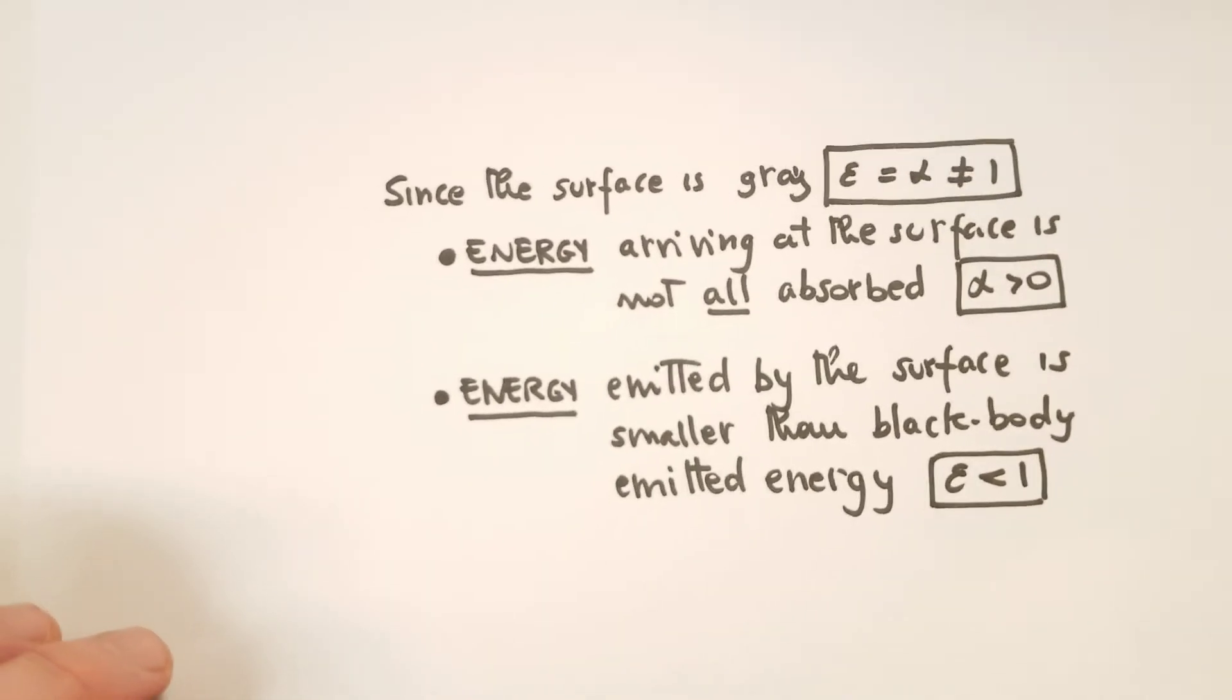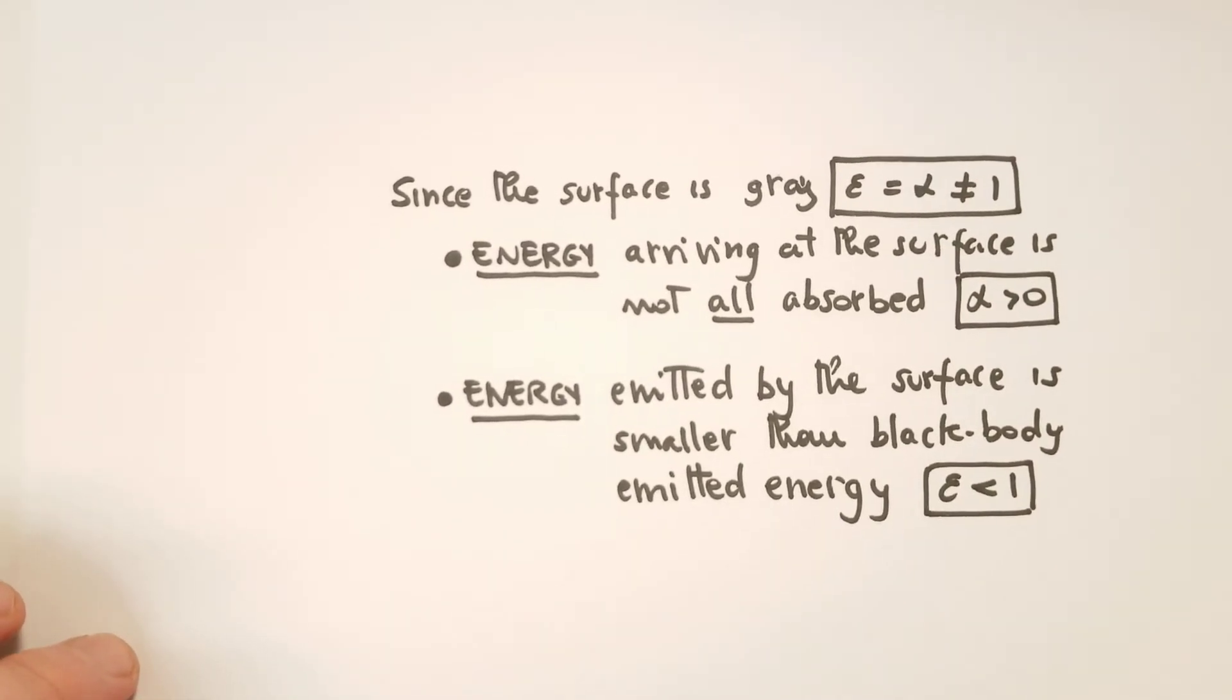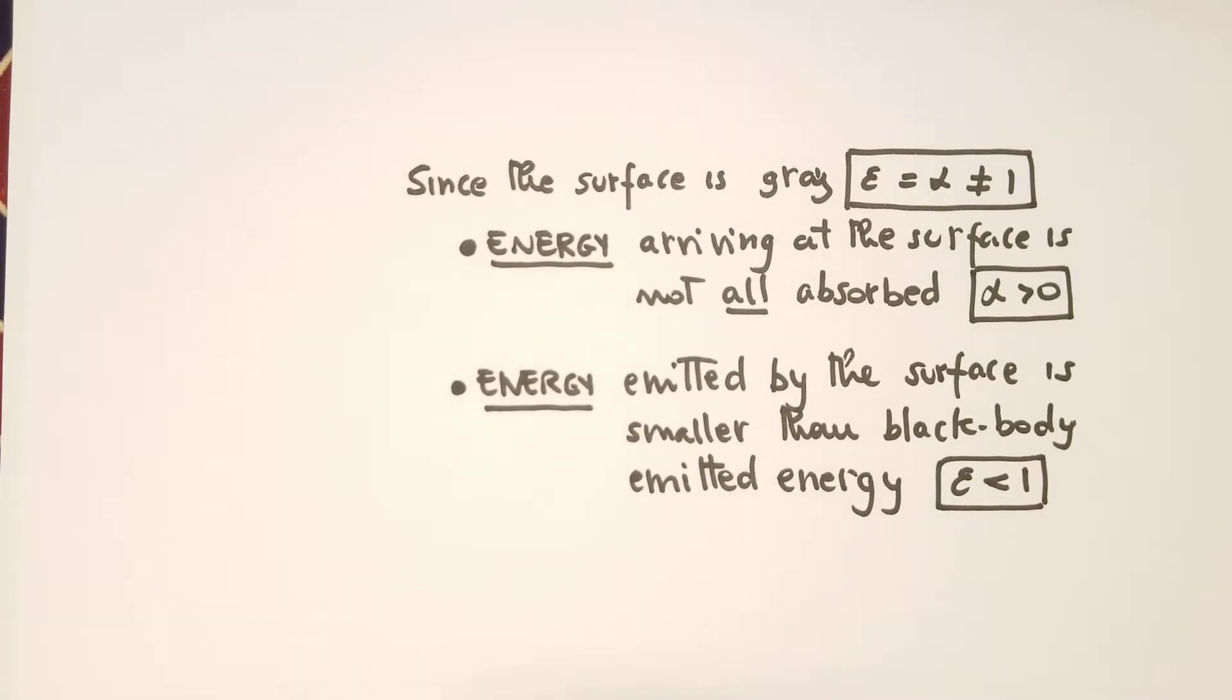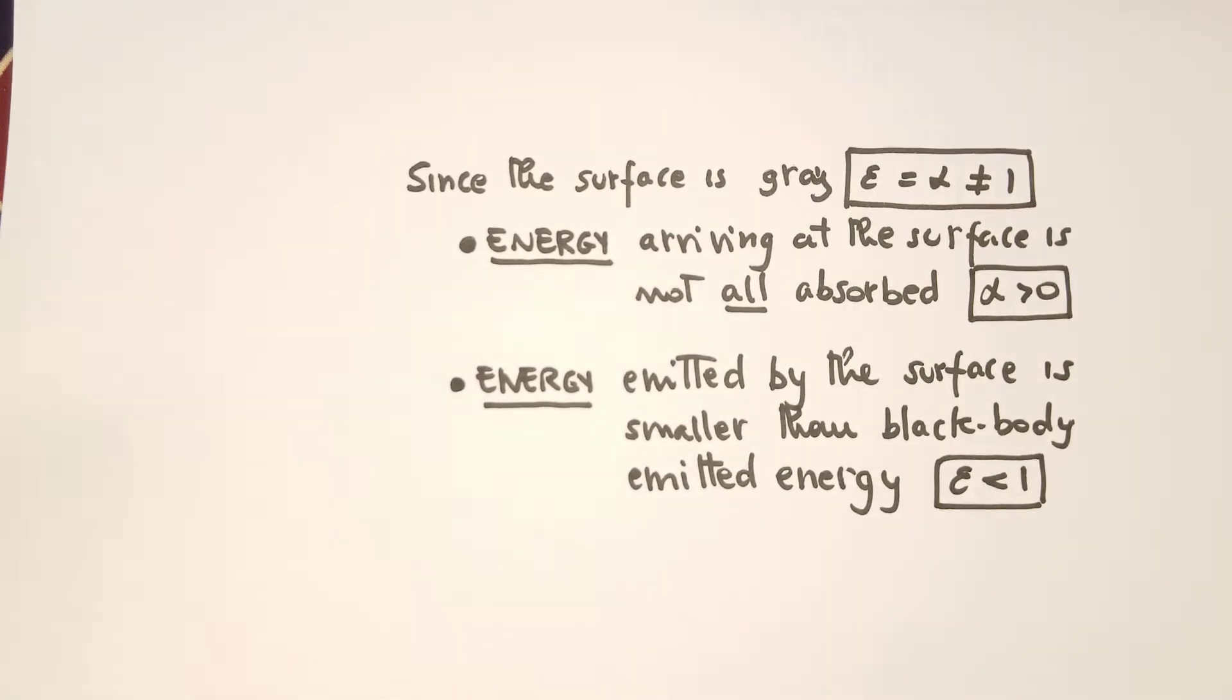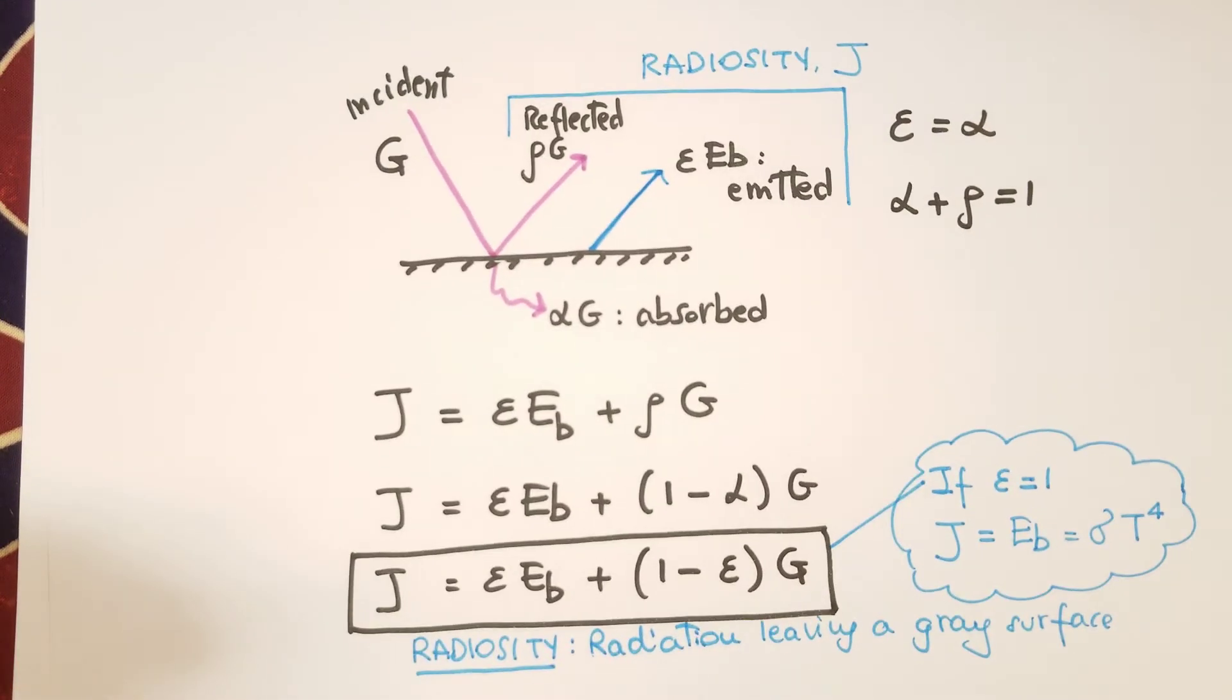Since the surface is gray, the emissivity is different from 1, that's equal to the absorptivity because of Kirchhoff's law, and the energy arriving at the surface is not all absorbed like in a black body, but part of it is actually reflected back to the environment. And also the energy emitted by the surface itself is smaller than black body emitted energy, because ε, the emissivity, is smaller than 1. So these two physical ideas can be represented graphically, like this.